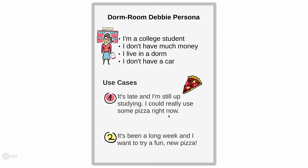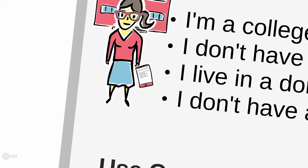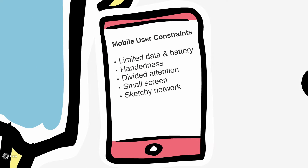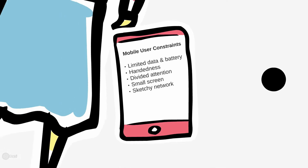Our use cases are: she's up late and she wants pizza right away, or it's been a long week and she wants to try something new and fun. Now this is a mobile app, so regardless of who the user is, we cannot violate the following mobile user constraints, such as limited data and battery life, handedness, divided attention, and so on.